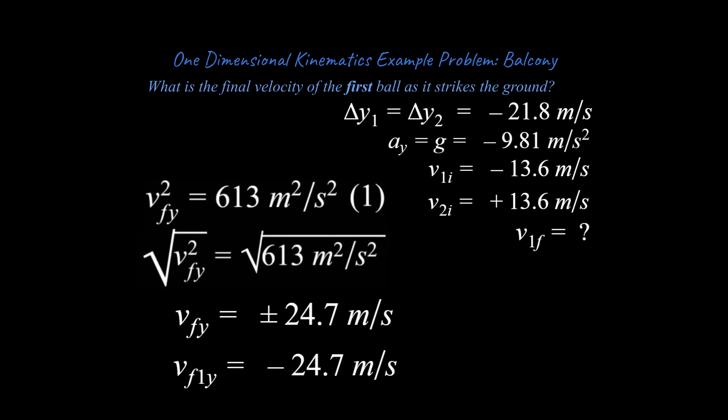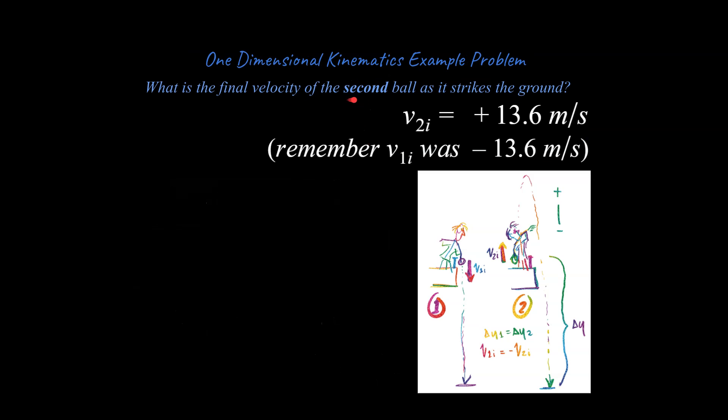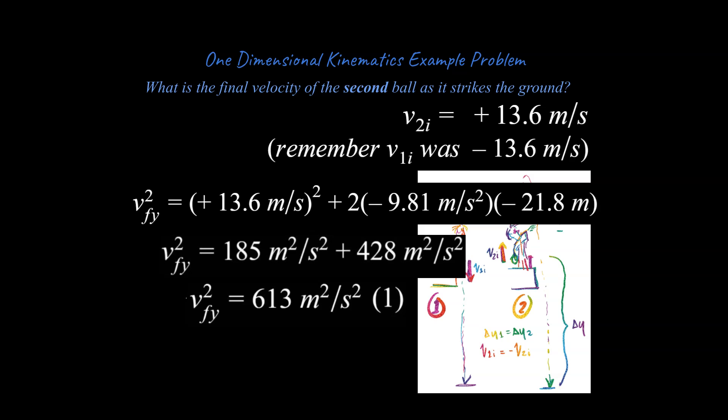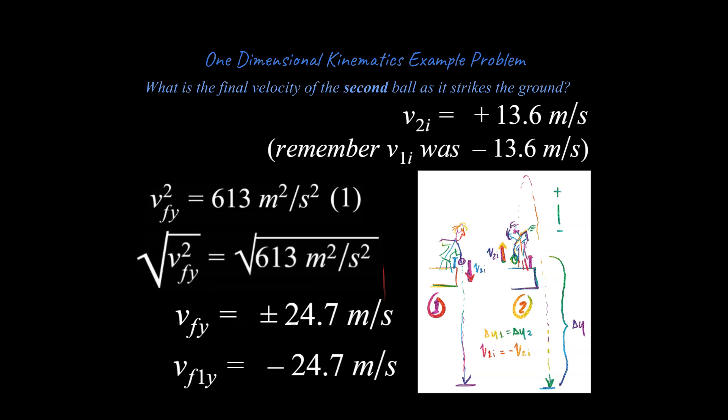Now let's look at the second part of the problem. The second part of the problem says essentially do the same thing for the second ball and remember the key difference being this is going to be a positive 13.6 meters per second not a negative. So for the second one it's thrown upwards with the same speed that it was thrown downwards previously. All right so we do the same math and this is now positive but because it's squared it really doesn't matter.